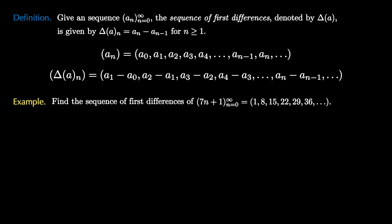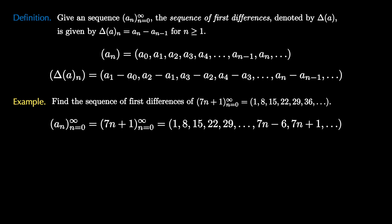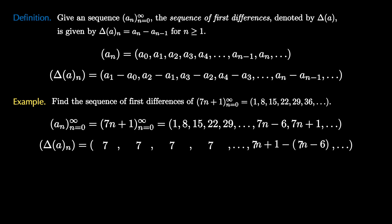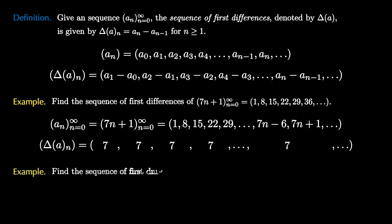Let's find the sequence of first differences of the arithmetic sequence 7n plus 1. We list out the sequence and subtract successive terms: the first term is 8 minus 1, the second is 15 minus 8, the third is 22 minus 15, the fourth is 29 minus 22, and so on, so the nth term is (7n+1) minus (7n−6). Simplifying, each term is 7 — a constant sequence — which matches what we know about arithmetic sequences.